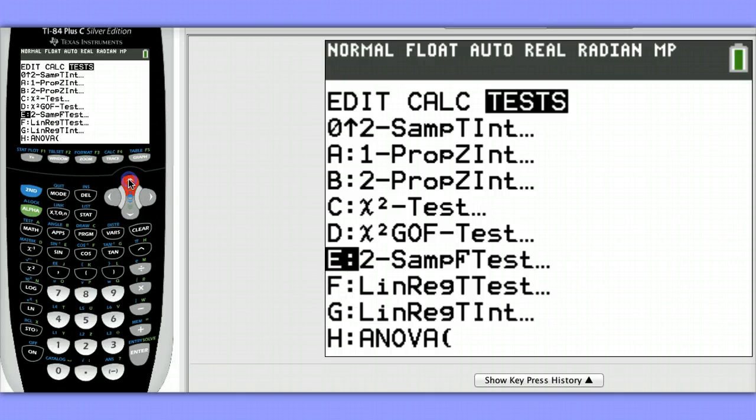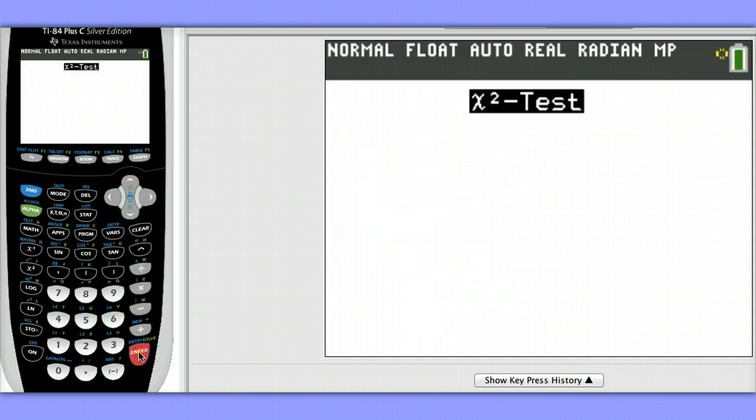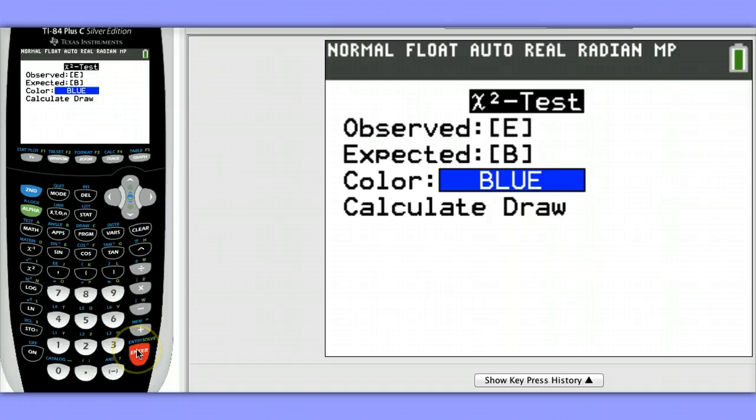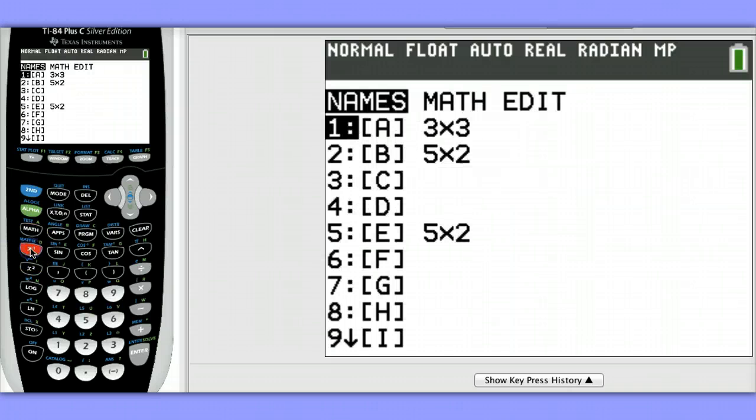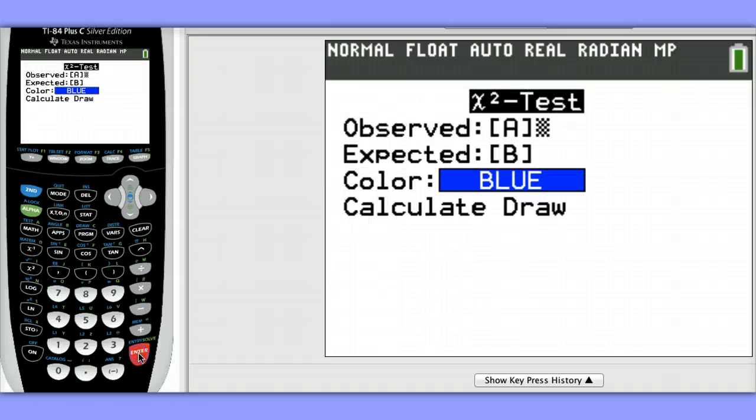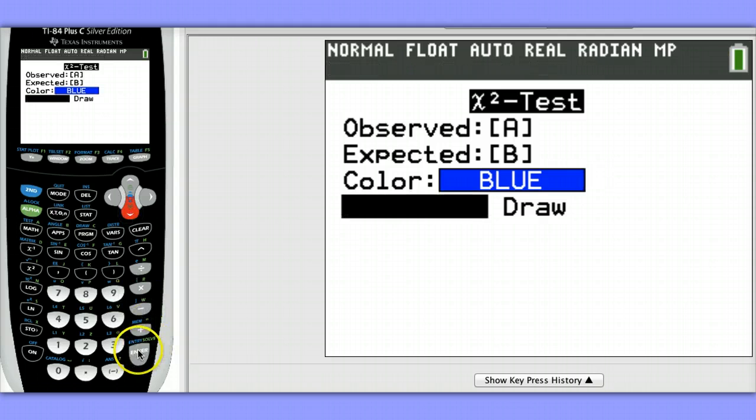Chi-square test, and we need to tell the calculator where our observed matrix is stored. It's stored in A, not E, so I need to change this. To change this, hit second, x to the negative one, and then hit enter on matrix A. The expected counts are going to be stored in matrix B. We'll leave the color as blue, and we'll come down here to calculate.